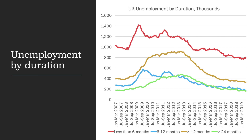Frictional unemployment is typically fairly short term. This chart shows the number of people in the UK quarter by quarter who have been out of work, according to how long they've been registered as unemployed. The key line is the red line, which shows the number of people out of work for less than six months. There was a sharp increase in short-term unemployment at the start and aftermath of the recession in the great financial crisis of 2007–2008, when nearly 1.5 million people were unemployed for up to six months.